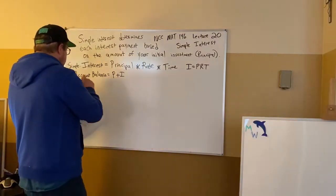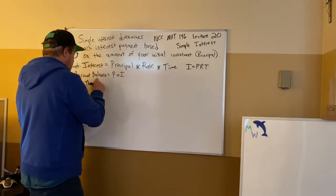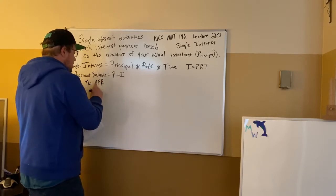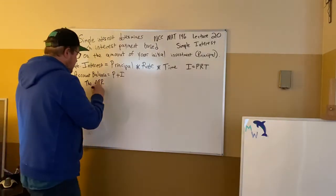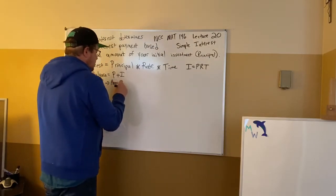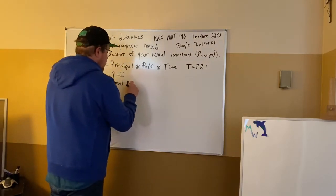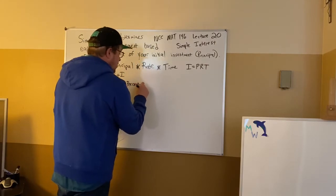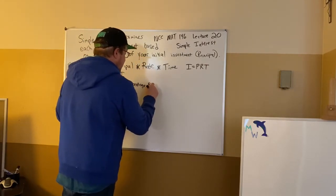So the period, the APR, this is not A times P times R, this is A period P period R, is the annual, which means once a year, percentage, which means over 100, rate. There you go. A-P-R.